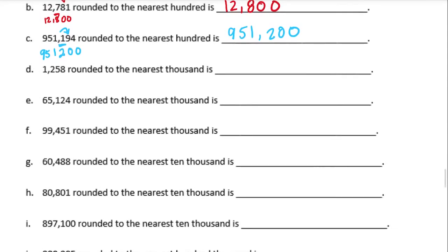D: 1,258 rounded to the nearest thousand. The one is the thousands place. Next to it is a two — that's four or lower — which means the one stays the same and everything behind it becomes zeros. If there were something in front of the one it would stay the same, but there isn't, so it just rounds to 1,000.